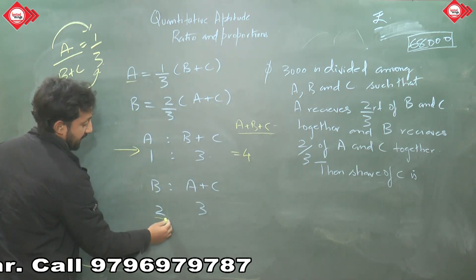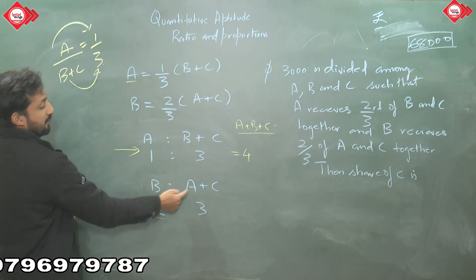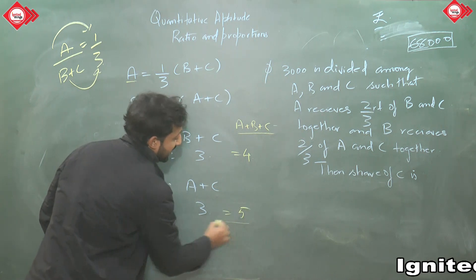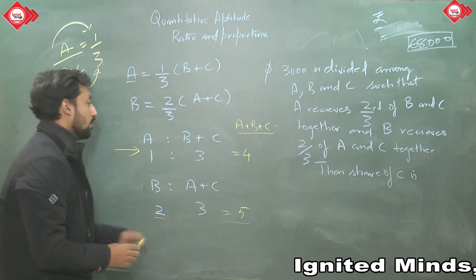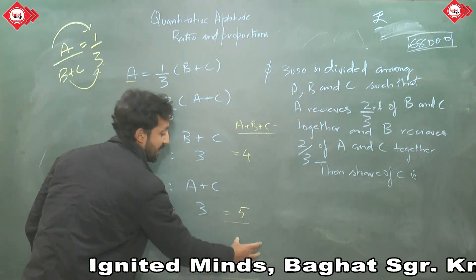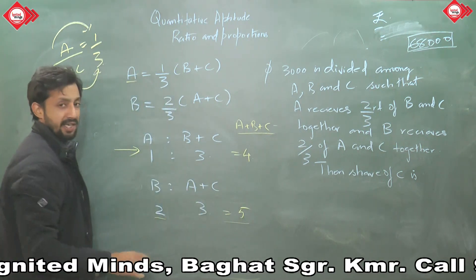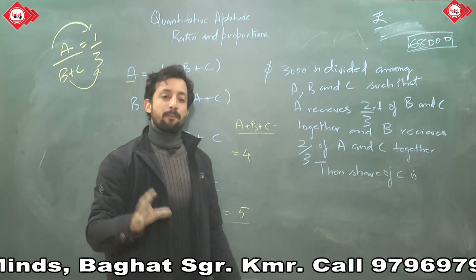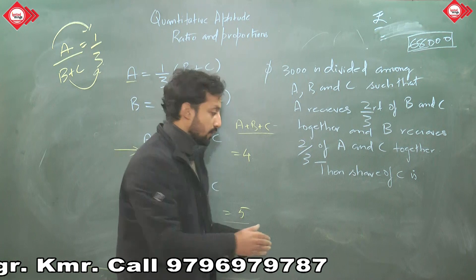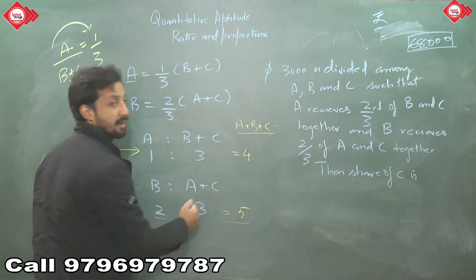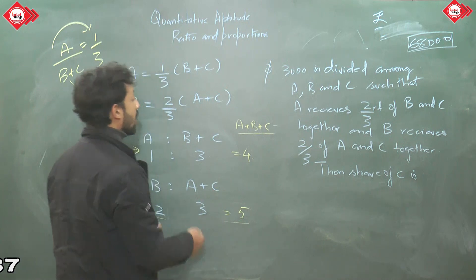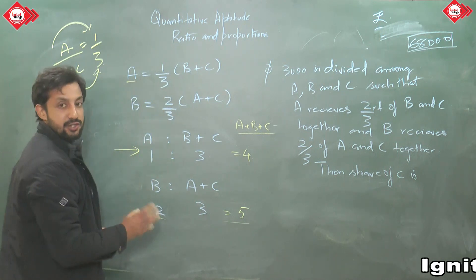After multiplying: from equation 1, A = 5 parts and B+C = 15 parts (total 20). From equation 2, B = 8 parts and A+C = 12 parts (total 20). Both totals are now 20, so we're on common ground.